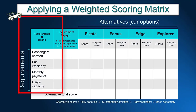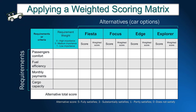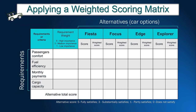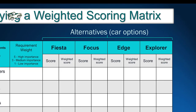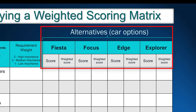Secondly, we need to identify alternatives — in this case, the car models John can buy. To be more illustrative, we decided to present alternatives manufactured by Ford. The four models are Fiesta, Focus, Edge, and Explorer.